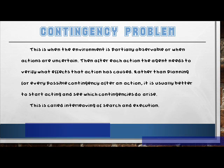Another problem is the contingency problem. Here, an agent's action is uncertain, so after every action, the agent needs to verify what effects the actions cause. If the uncertain action is caused by another agent, the problem is called adversarial. To sum up, the sensorless problem concerns the uncertain location of the agent, while the contingency problem concerns the uncertain actions of an agent or more.